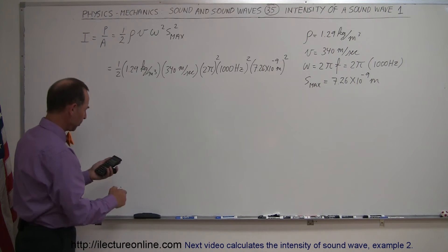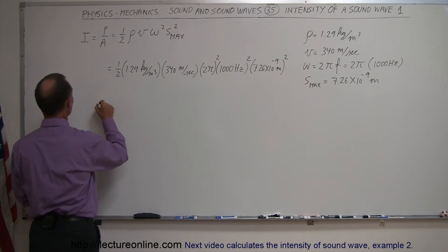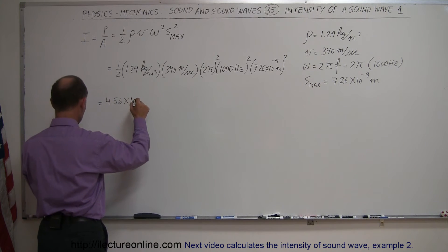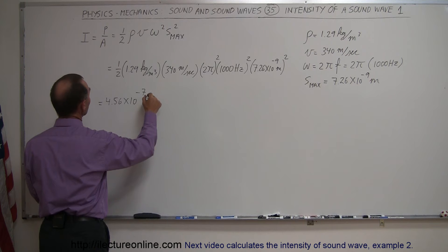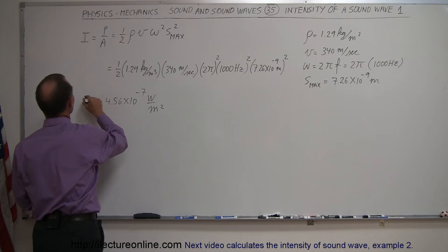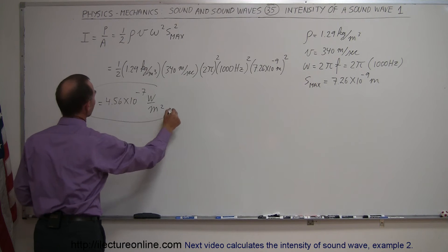And what do I get? Let's see here. I get 4.56, so this is equal to 4.56 times 10 to the minus 7, and the units will be watts per square meter. Notice that it's power per unit area, and that's the intensity.